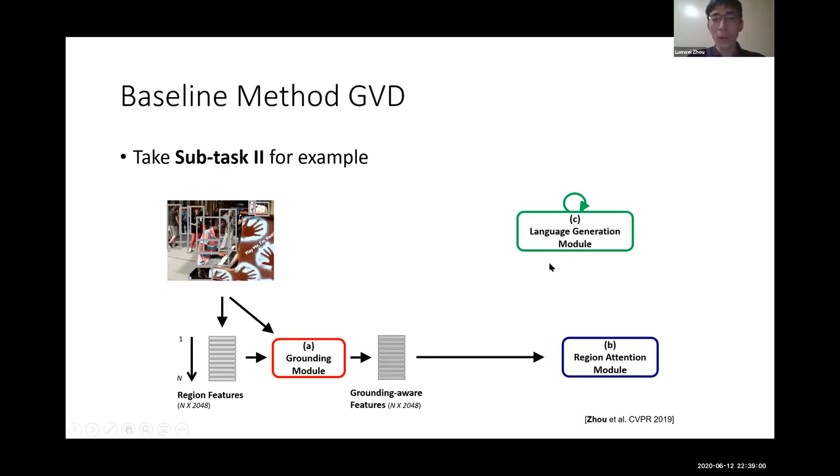The region attention module receives a signal from the language decoder, usually the start signal. Module B uses it as a query to apply attention on the refined feature to get attention weights, then performs a weighted sum and provides that as evidence to the language decoder. Finally, the language decoder outputs words.